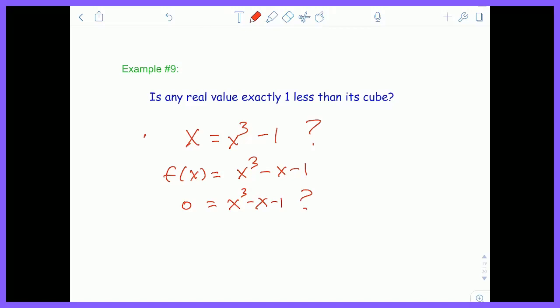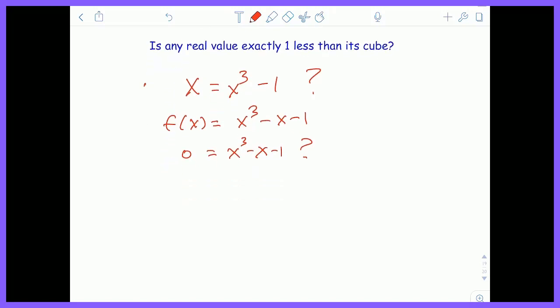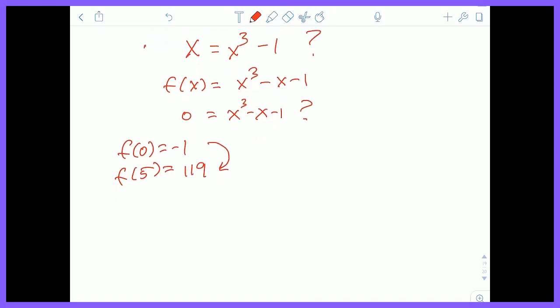I think you can see where we're going. Is it continuous? Yes. Let's find some values. I'll check 0 again: f(0) = -1. And I'll check 5: f(5) = 119. This is enough evidence to say a solution exists somewhere between 0 and 5.